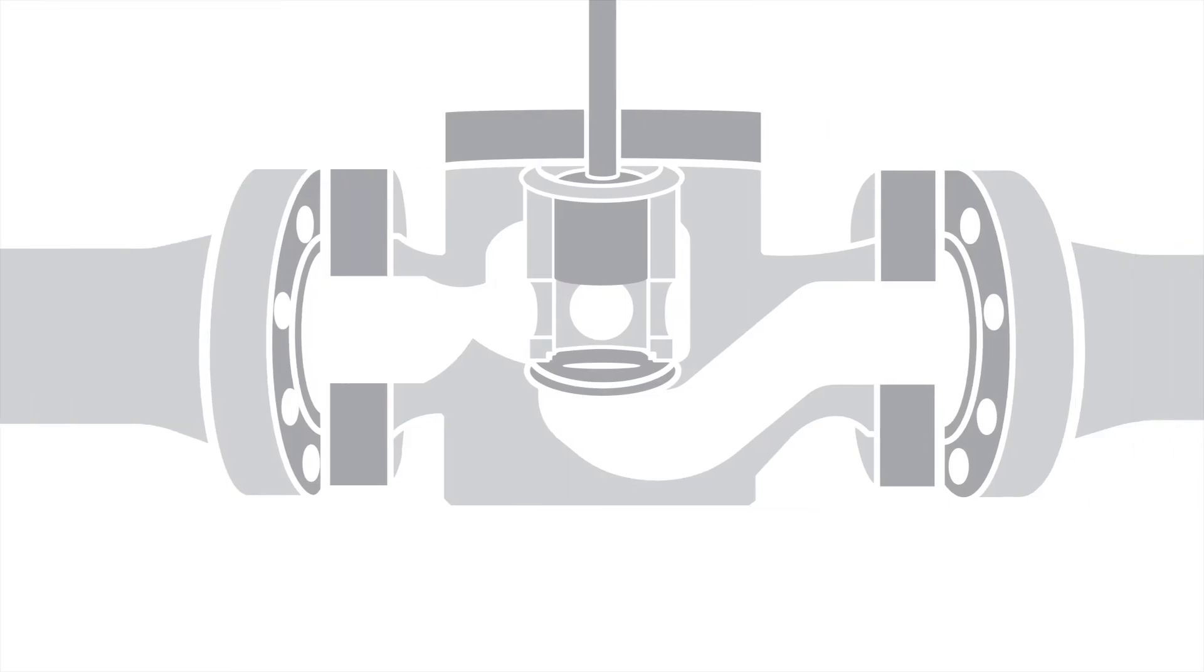Within the control valve, there is a primary opening through which the process fluid will flow. These parts that change the flow area within the control valve are collectively referred to as trim.